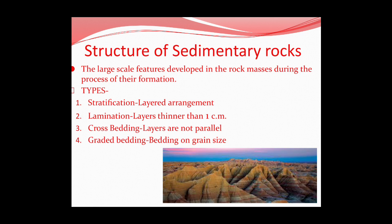Structure of sedimentary rock: sedimentary rock masses have different structures classified into two types. First, stratification — a layered arrangement where every layer of mineral is deposited over a period of time and becomes rock due to natural forces. Next, lamination: layers thinner than a centimeter. Then cross bedding, where layers are not parallel to one another and may be zigzag or have undulations. Finally, graded bedding, where the bedding depends on grain size with different layers of grains in different layers of sedimentary rock.